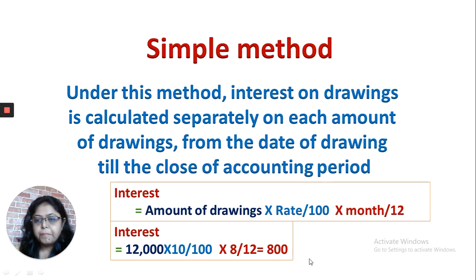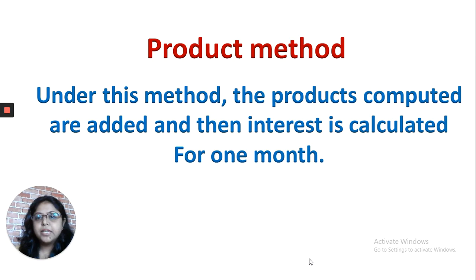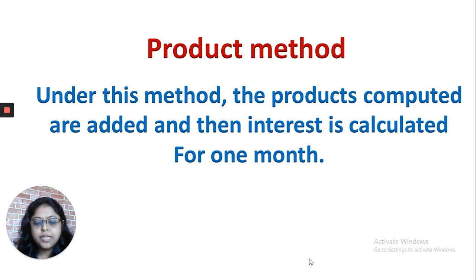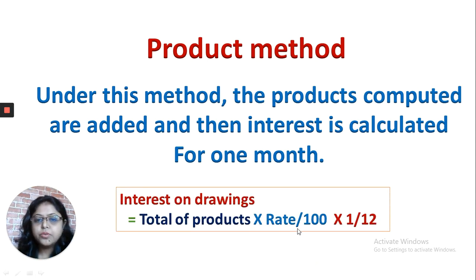The product method is useful when the partner is withdrawing amounts frequently and a greater number of times. In the simple method, it becomes difficult to calculate for each individual withdrawal. In the product method, a table is prepared, the amount and the number of months left are calculated to get a product, and the total of all products is taken. The formula used is: total product × rate/100 × 1/12.